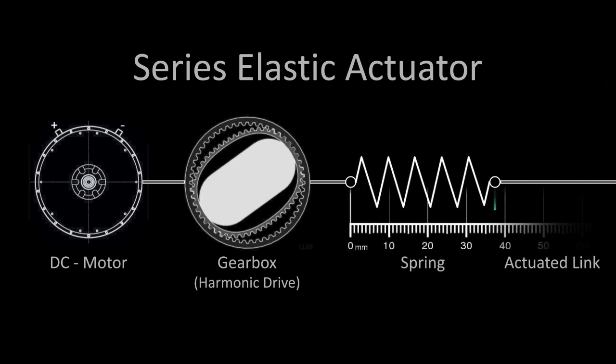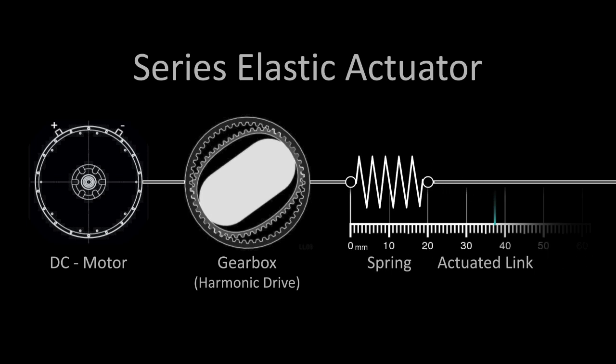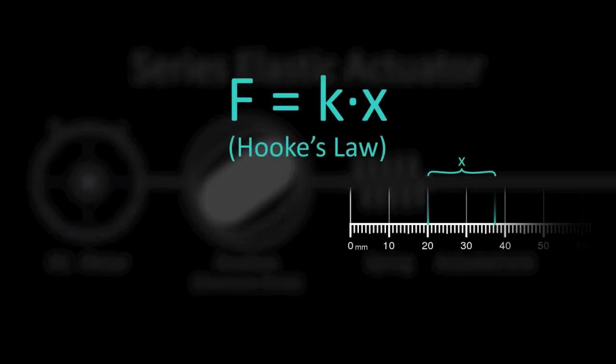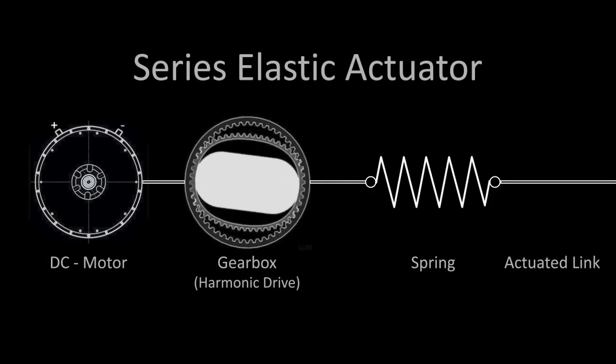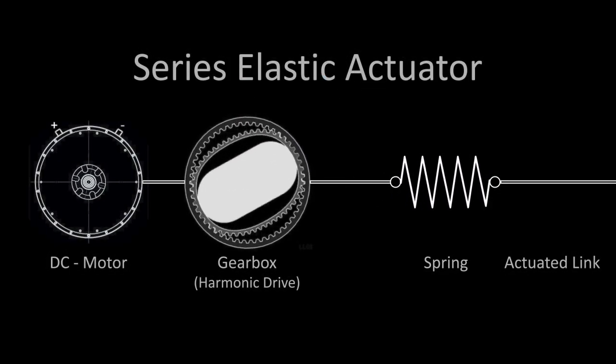Measuring the spring deflection and applying Hooke's law, we get precise information about the actual joint torque. By moving the actuator correctly, the actual joint torque can be controlled.